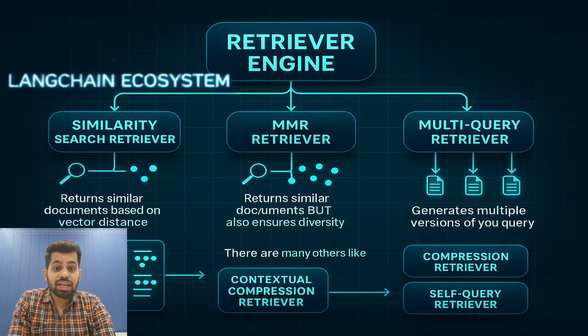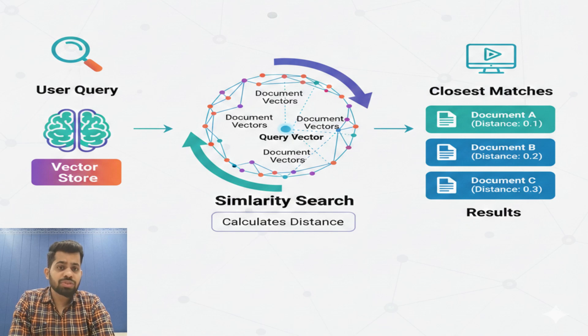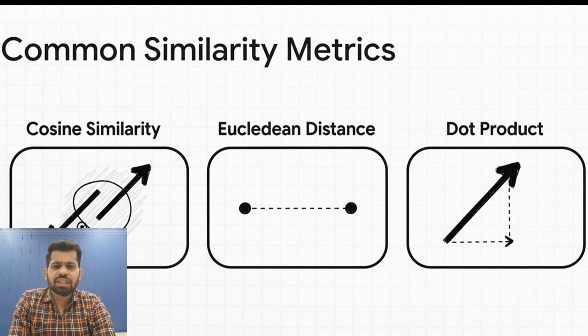But how does it do it? There are various algorithms supported by LangChain. For example, similarity search retriever returns the K most similar documents based on vector distance. Or MMR - maximum marginal relevance - that returns similar documents but ensures diversity. Multi-query retriever generates multiple versions of the query to catch documents that might be missed by a single query. There are many others like compression retriever, contextual compression retriever, self-query retriever, and many more. The retriever queries the vector store, which performs similarity search by calculating the distance between your query vector and every document vector and returns the closest matches. The distance metric can be calculated by cosine similarity, Euclidean distance, or dot product.